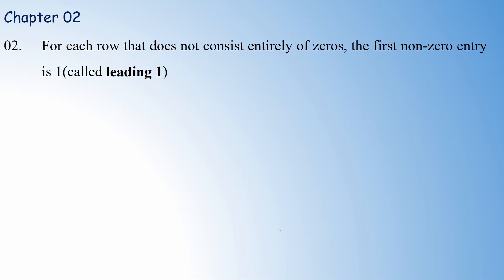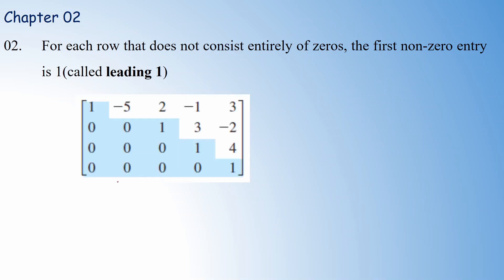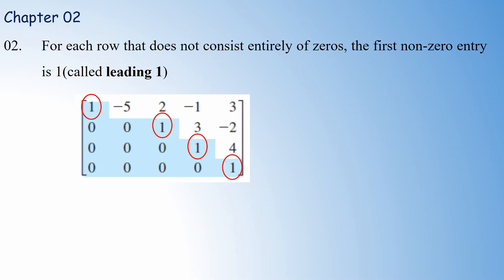The second condition: for each row that does not consist entirely of zeros, the first non-zero entry must be 1. We call this the leading one. For example, looking at the third row — it is a non-zero row and its first non-zero entry is 1. For any non-zero row, the first entry must always be 1. That is the second condition for a matrix to be in row echelon form.